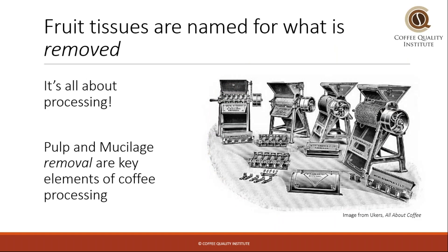So where did this come from? In the coffee industry, it's easy to understand that the fruit tissues are named for the parts that are removed — it's all about coffee processing. Pulp and mucilage removal are key elements to processing coffee, because the very basic point of processing is that you need to remove the fruit and dry the seed so it's safe for export. Removing the fruit, and which parts of the fruit, becomes very important and ends up defining which processing method any given producer takes.